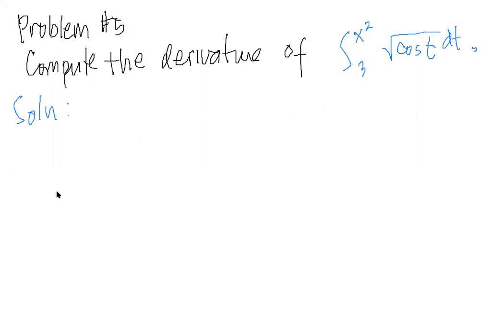In problem number five, we need to compute the derivative of the integral, the square root of cosine t with respect to t from 3 to x squared.